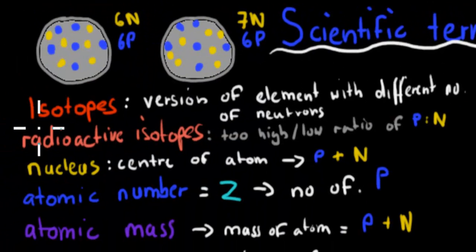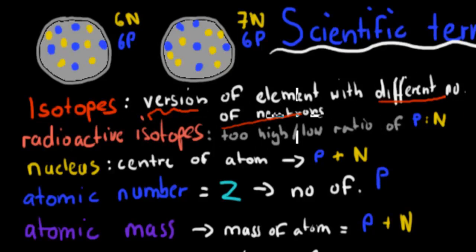The first one I'm going to go over is an isotope. An isotope is a version of an element with a different number of neutrons. So for example, here we've got two different ones. This is carbon-12, and this is carbon-13.